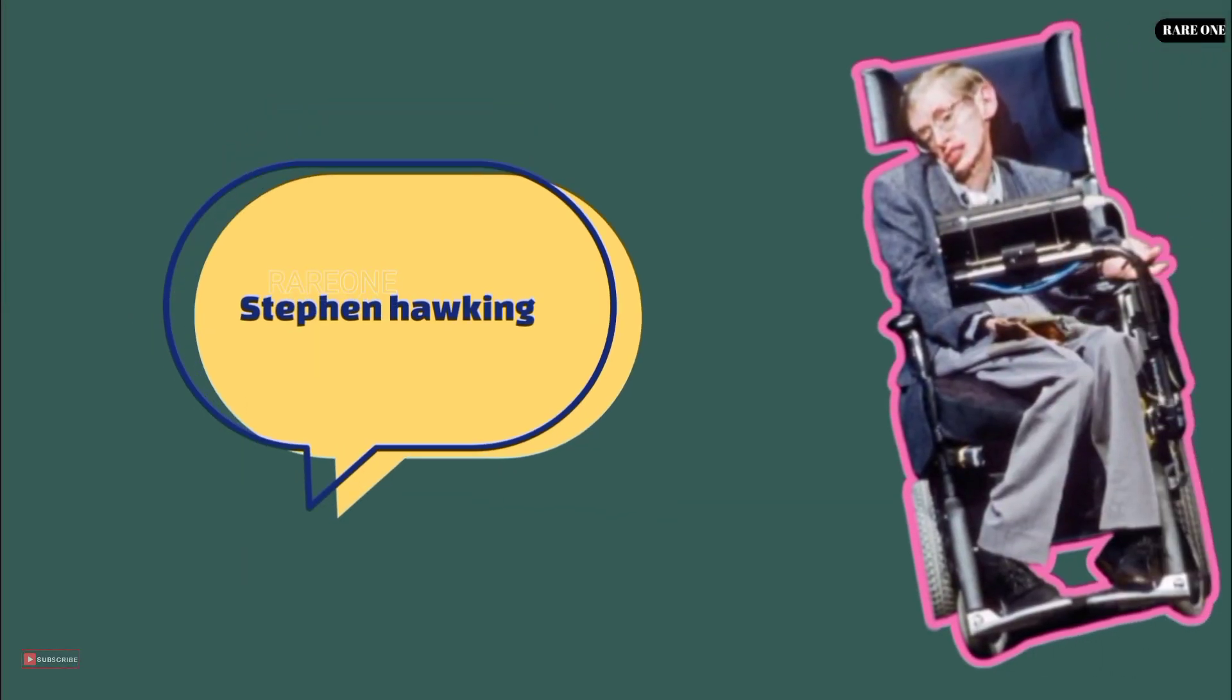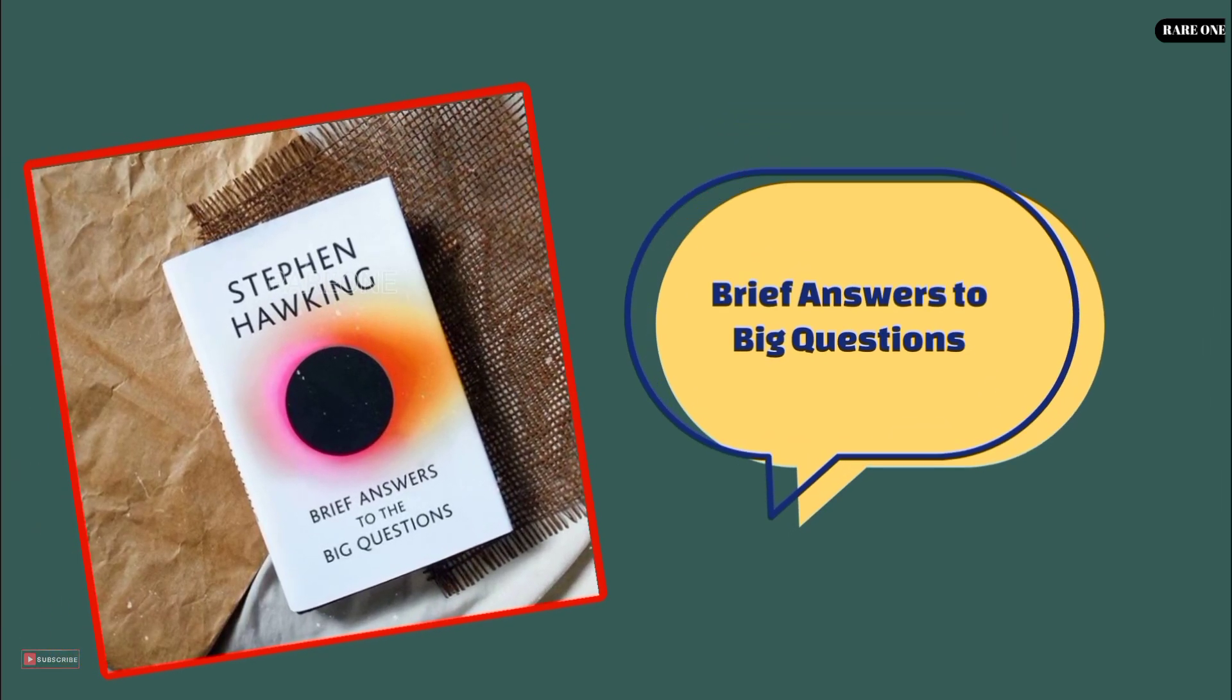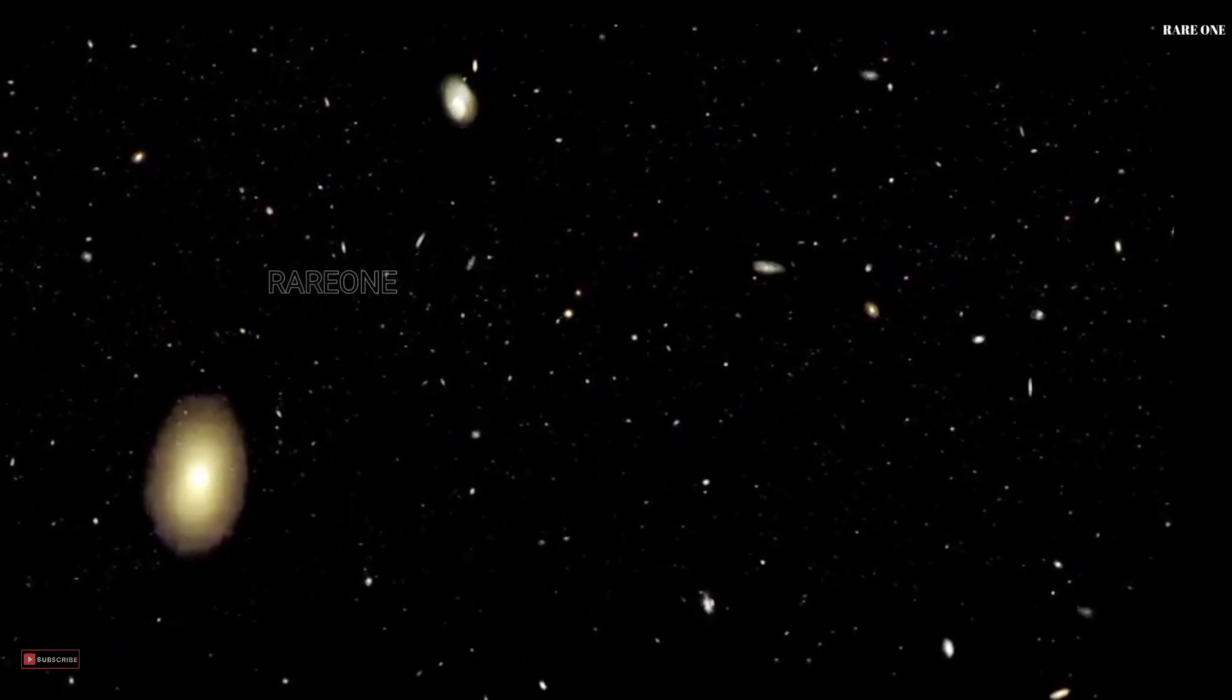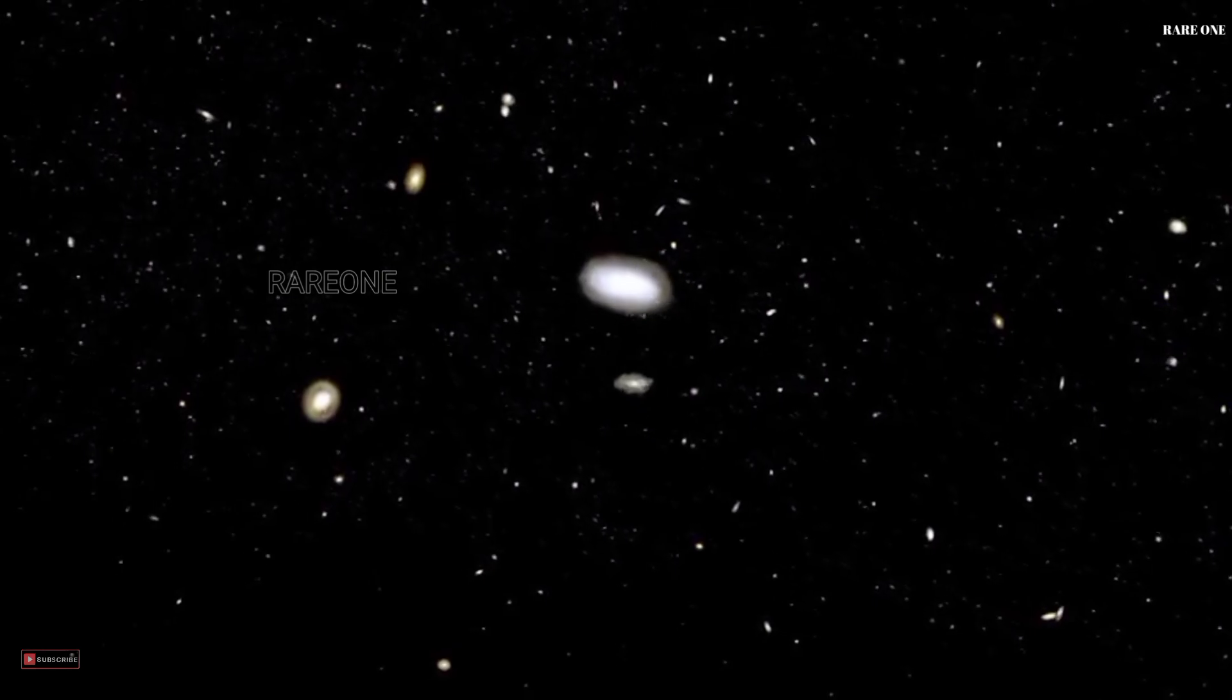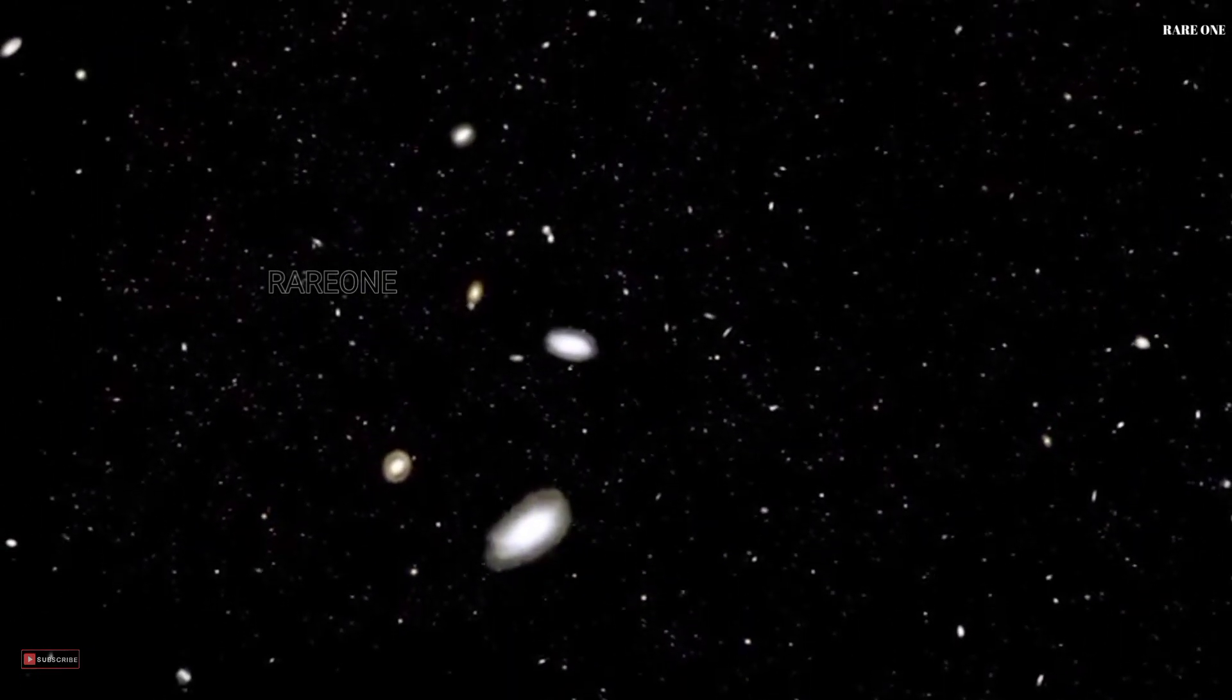Now, let's switch gears to Stephen Hawking. In his final book, Brief Answers to Big Questions, Hawking tackles the God question head on. Hawking's answer? It's all about science. He believed the universe could have created itself out of nothing, simply following the laws of physics.